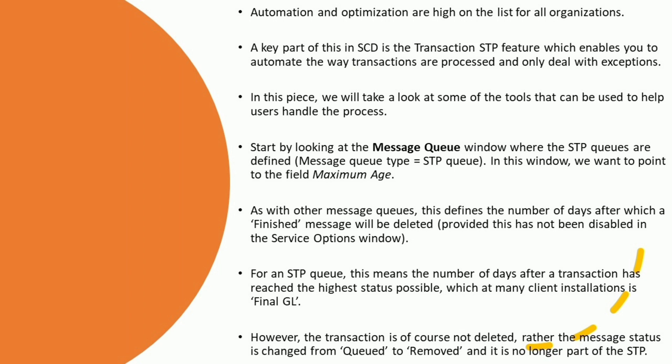Start by looking at the Message Queue window where the STP queues are defined — message queue type equals STP queue. In this window, we want to point to the field Maximum Age. As with other message queues, this defines the number of days after which a finished message will be deleted, provided this has not been disabled in the Service Options window.